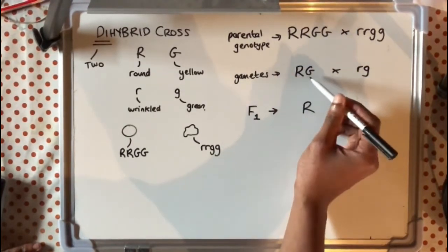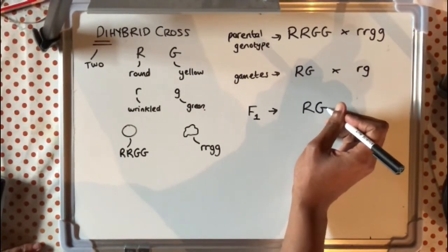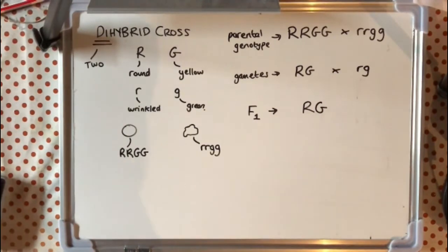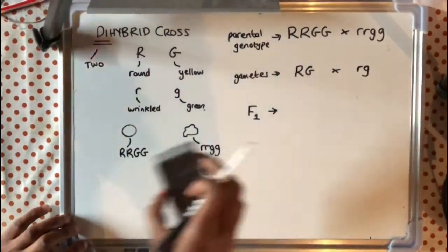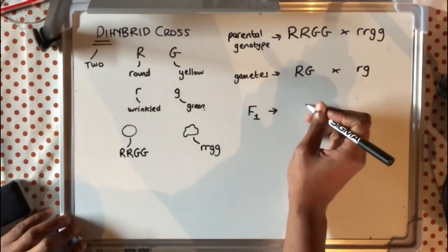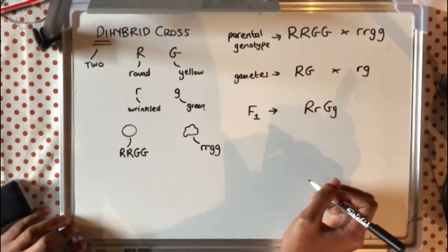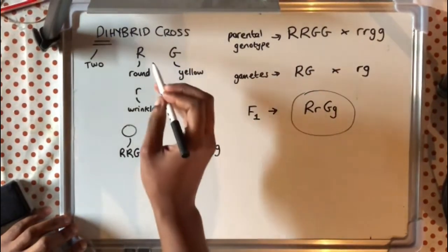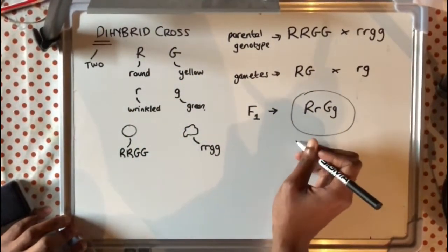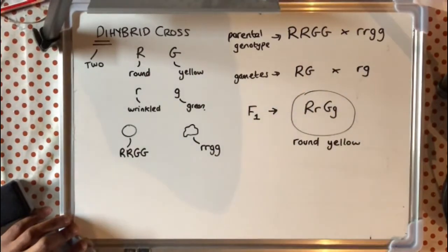For dihybrid inheritance, we must remember that letters representing the same gene need to be written together — so the R's together and the G's together. The correct F1 genotype is capital R, lowercase r, capital G, lowercase g. If we look at the phenotype from there, it would be round and yellow for all of those F1 pea plants.